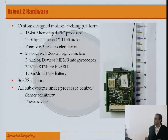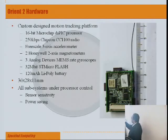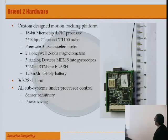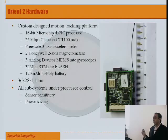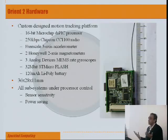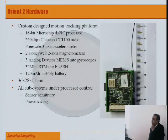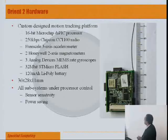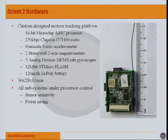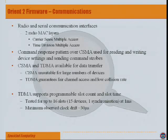The hardware is custom designed to include the battery. It uses a 16-bit Microchip DSP processor, a ChipCon radio — previously we had a 2.4 GHz Zigbee-style radio but found going down in frequency reduces absorption in the body. It has Honeywell magnetometers, Analog Devices MEMS sensors, 32-megabit SD micro flash, and a 22 microamp-hour lithium polymer battery. All subsystems and processor controls handle sensor sensitivity and power saving. We have two radio MAC layers — a CSMA one and a TDMA one.